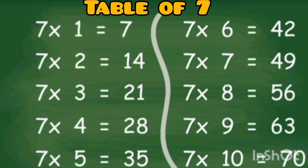7 1s a 7, 7 2s a 14, 7 3s a 21, 7 4s a 28, 7 5s a 35, 7 6s a 42, 7 7s a 49, 7 8s a 56, 7 9s a 63, 7 10s a 70.